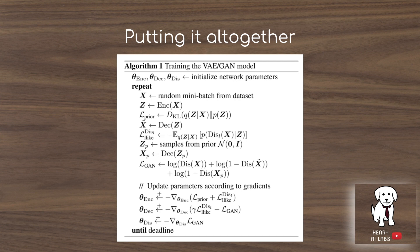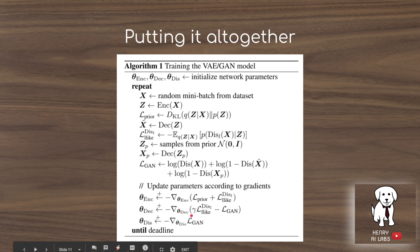Putting it all together, the training algorithm works as follows: you have parameters for the encoder, the decoder, and the discriminator. You sample a random batch of images, encode the batch into the low-dimensional vector space, and apply the loss function on how the vector space was constructed. Then you decode the images from the vector space, apply the intermediate feature loss measuring dissimilarity between reconstructed and original images, and apply the GAN loss. You then update the parameters with the appropriate weighting on the decoder's update, and specific loss terms are routed to the corresponding models.